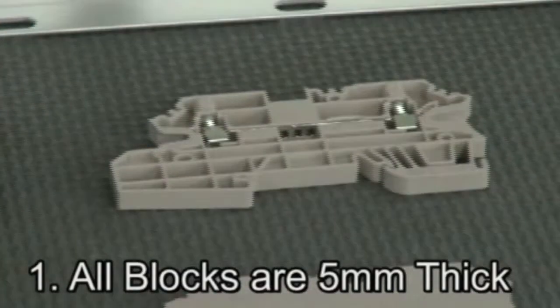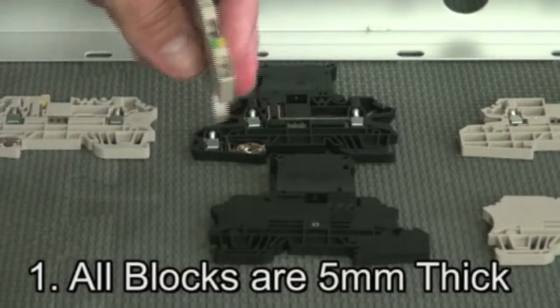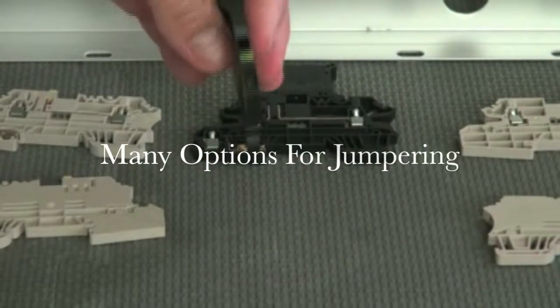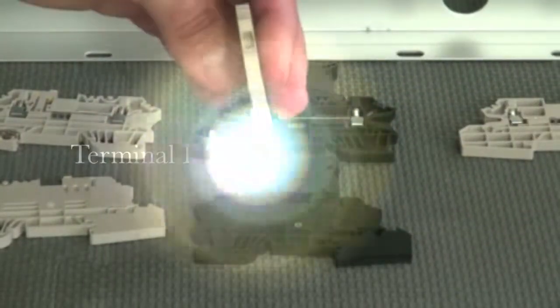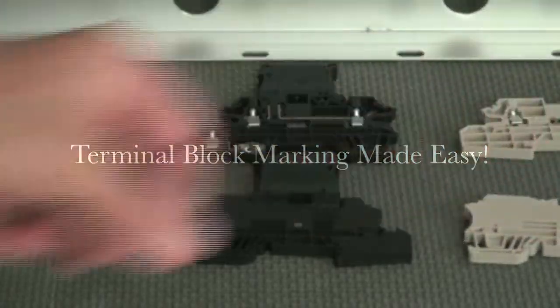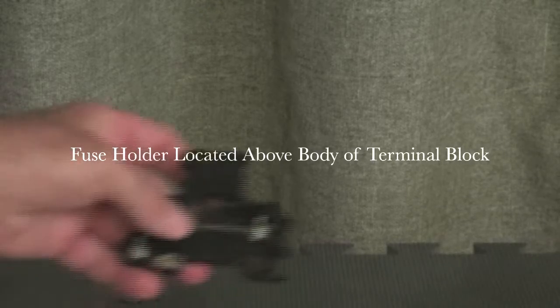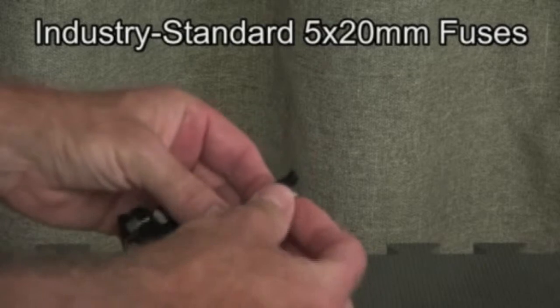All of the blocks in this series are 5 millimeters thick. This consistent block thickness provides many options for your cross-connection or jump ring requirements and makes terminal block marking a breeze. This 5 millimeter effective thickness is possible because the fuse holder is located above the body of the terminal block. These fuse blocks accept industry standard 5 by 20 millimeter fuses.